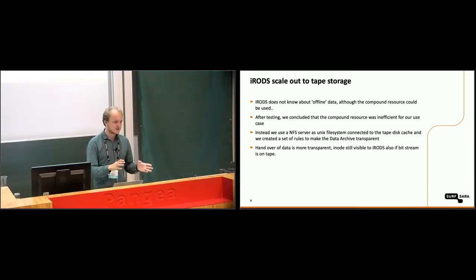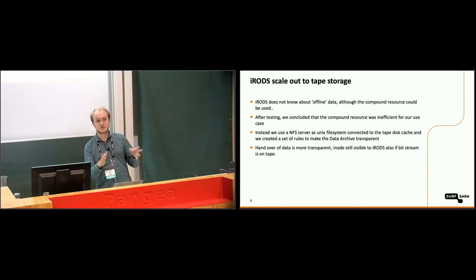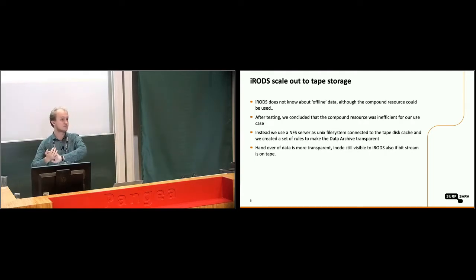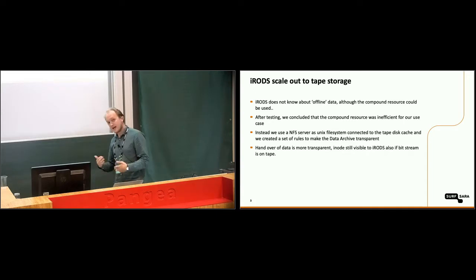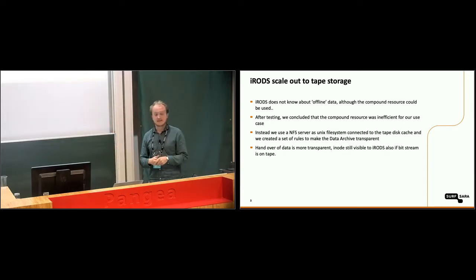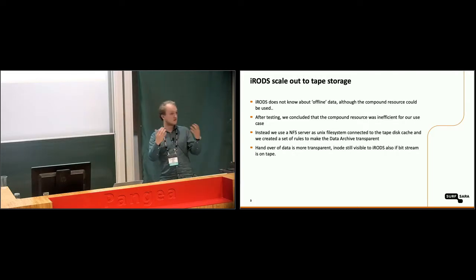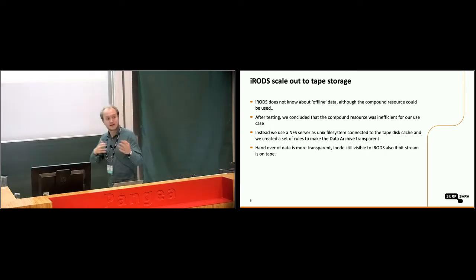Instead, we made it a little bit easier. We just used a normal UNIX file system resource — just like IRODS always knows — and have an NFS connection from this UNIX file system server directly to the disk cache on tape. In this way, the handover of the data is more transparent and nicer, because our data archive, which is managed by DMF, makes sure that the inode is still visible, so all the iCAT can still see the data.